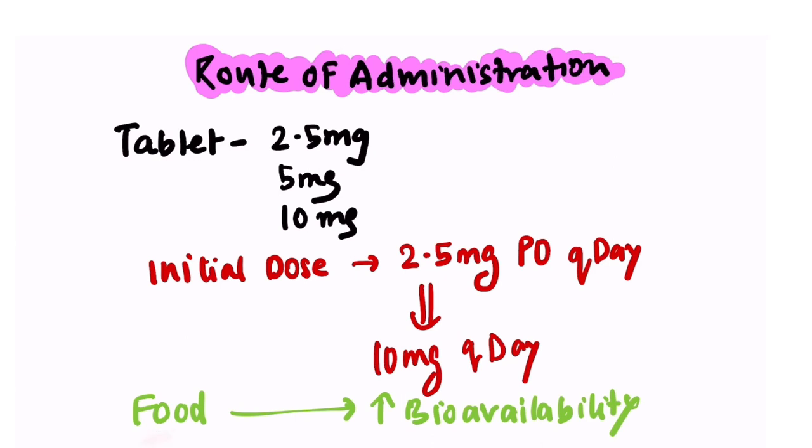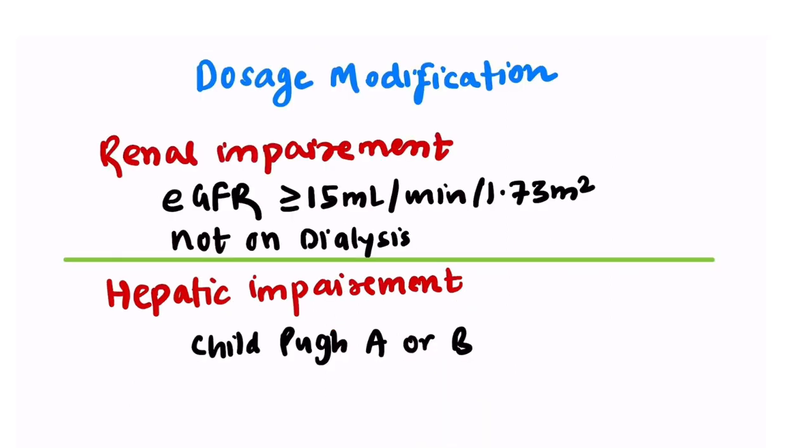Regarding dose modification in renal impairment: if the GFR is above 15 and patient is not on dialysis, it can be safely used. But if the GFR is below 15 or patient is on dialysis, the efficacy has not been studied yet. Similarly, in hepatic impairment, if the patient is in Child-Pugh A or B grading, that is, mild or moderate disease, then it can be used. But its effect in more severe disease has not been studied yet.